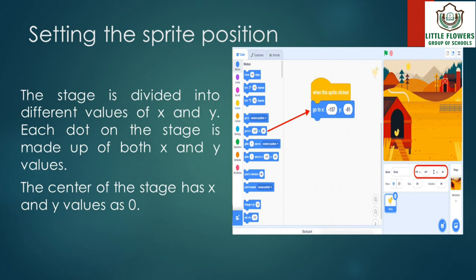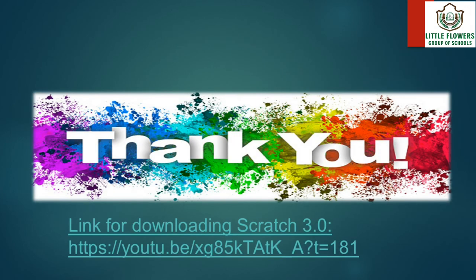Setting the sprite position: the stage is divided into different values of x and y. Each dot on the stage is made up of both x and y values. The center of the stage has x and y values of zero. That's it — I hope the chapter and the topics are clear. Thank you.